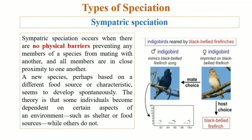Sympatric speciation is a type of speciation where individuals have no physical barrier or mating barrier, and all individuals are living in close proximity. In sympatric speciation, a new species develops spontaneously due to a change in characteristics or food source.